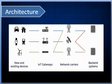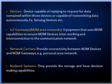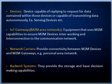Coming to the underlying architecture of M2M communication, there are four basic pillars: the existing devices, IoT gateways, network carriers, and backend systems. Devices are the instruments which are capable of replying to a request or capable of transmitting data autonomously. Examples are sensing devices, smart watches, fitness bands, and self-driven cars.